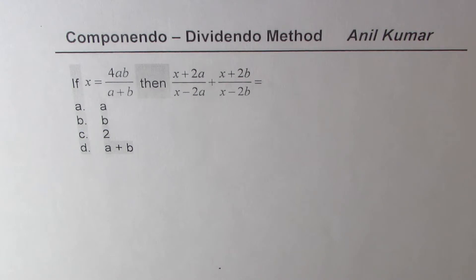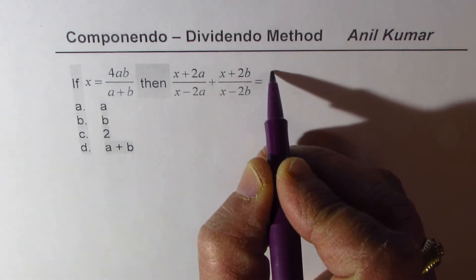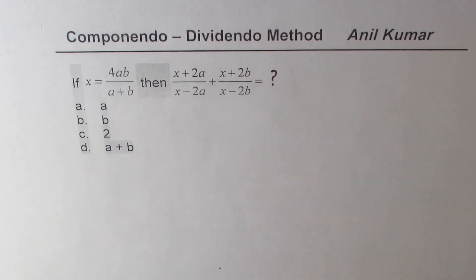The first question is: if x equals 4a over (a plus b), then find the value of (x plus 2a) divided by (x minus 2a) plus (x plus 2b) divided by (x minus 2b). Four choices are given; make a note, answer it, and then look into my suggestions.